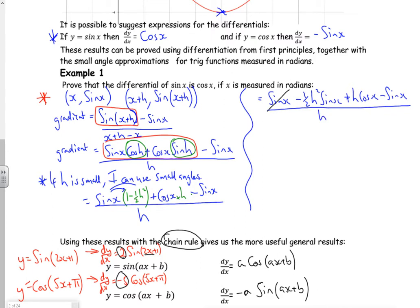What's quite nice is that the sine x is cancelled. I'm left with minus a half h squared sine x plus h cos x all over h. Where h is cancelled, so the h goes from the h squared, the h and the h. It gives me minus a half h sine x add cos x. So all I've got now is an expression for the gradient.